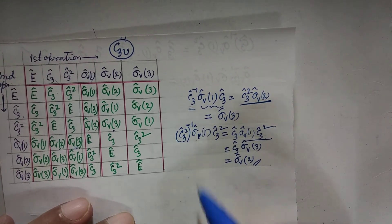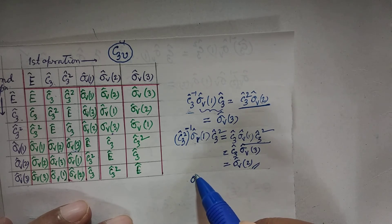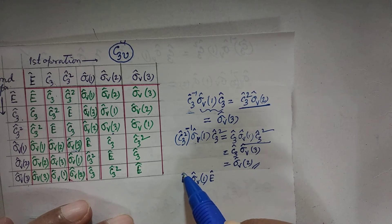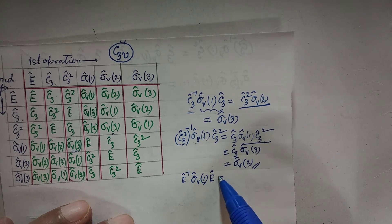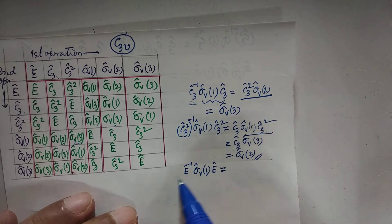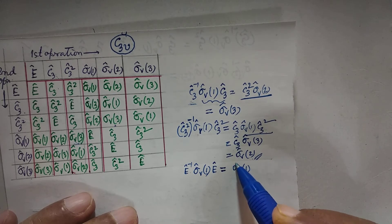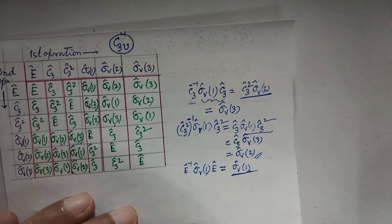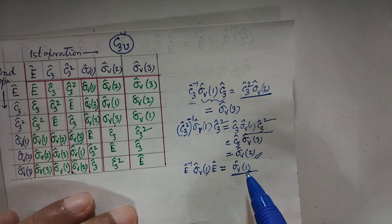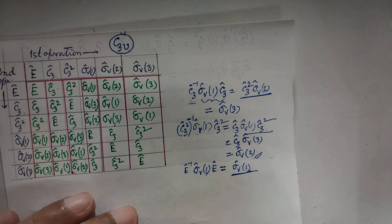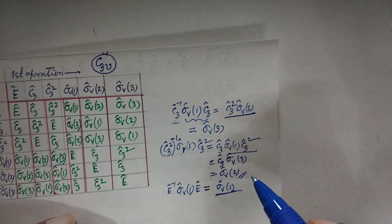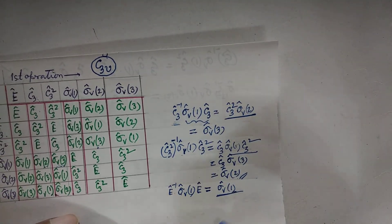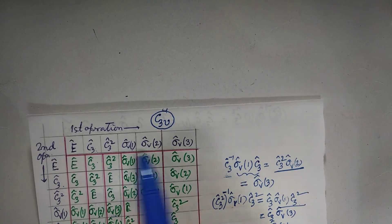Suppose you carry out the similarity transformation on sigma V1 using the identity operator. Although this is trivial, it is useful. This will give you sigma V1 itself, because E times sigma V1 times E inverse equals sigma V1. Any operator is conjugate to itself.